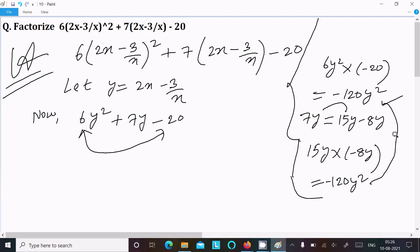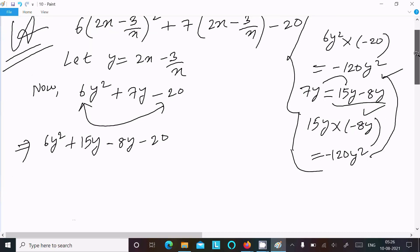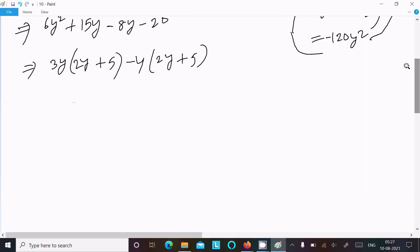So writing here 6y² then after 15y - 8y - 20. After that take the common: 3y common here, y + 5. Now take the common 4 from this here. So here 3y common, 2y here, and 4 × 5 equals 20.